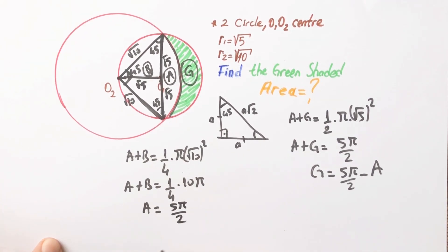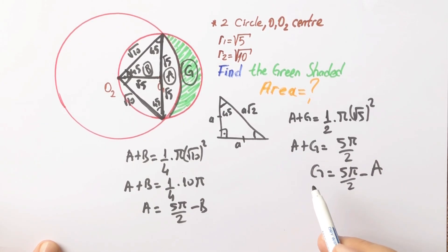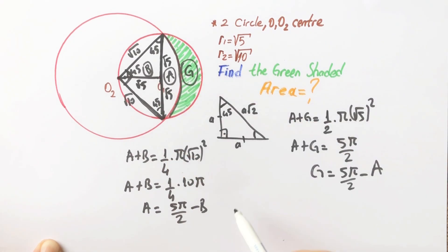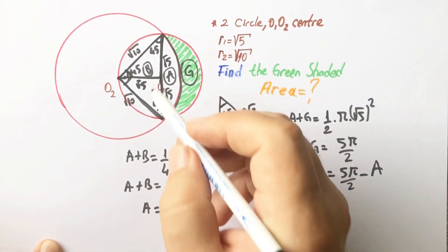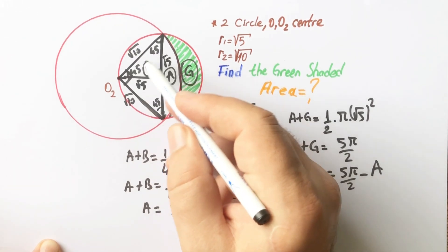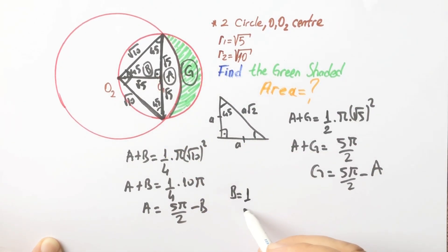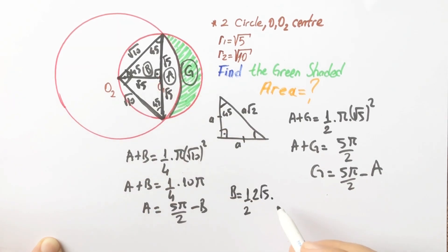Therefore, the area of A equals 5π/2 minus B. That means if we can calculate the area of B, we get the area of A, and then plug it into the formula to get G. B equals one half times base times height: one half times 2√5 times √5, so B equals 5 square units.